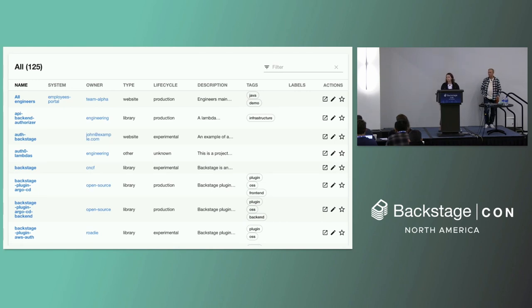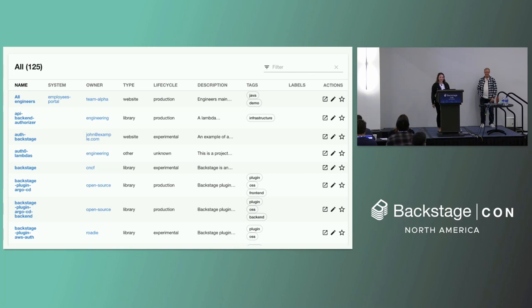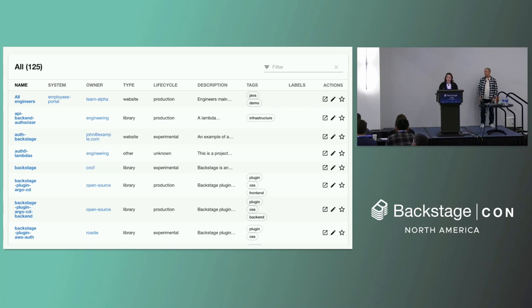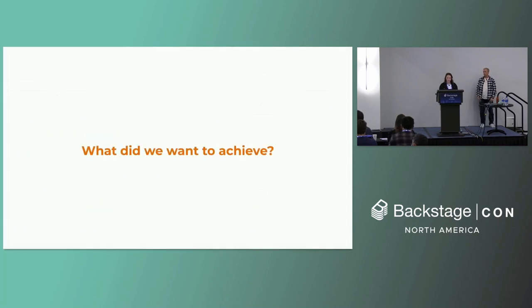Over time the number of our services increased — more than a hundred, more than a thousand. We figured out that manually checking things wasn't easy anymore, so we were looking for an automated way to keep us efficient because we realized we weren't as efficient as before. We had a couple of main goals in mind.